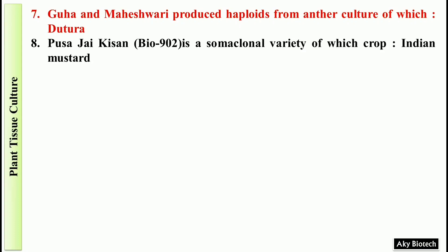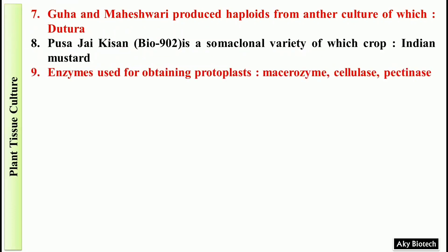Question 9: Enzymes used for obtaining protoplasts. The enzymes used are macerozyme, cellulase, and pectinase. Question 10: The term somaclonal variation...